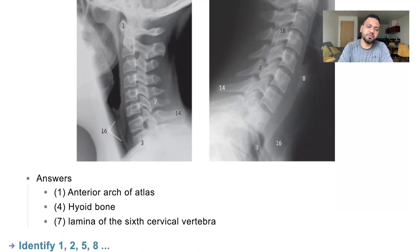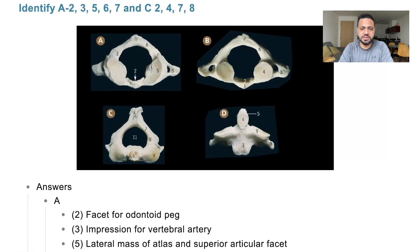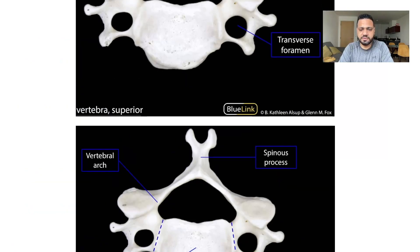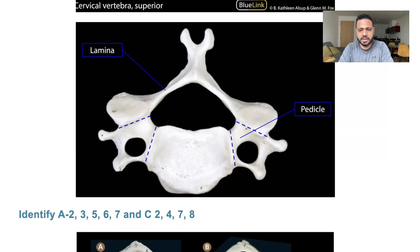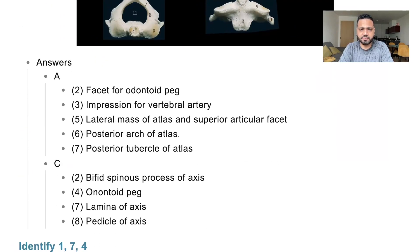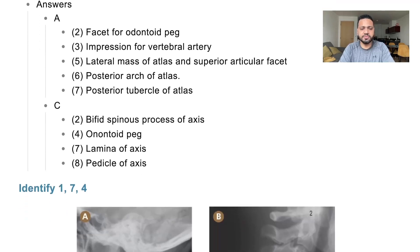The pedicle will be a little bit more inside, as we saw in the first diagram. So the pedicle is this one, and the lamina is this one. Similarly here, 7 is the lamina and 8 is the pedicle.